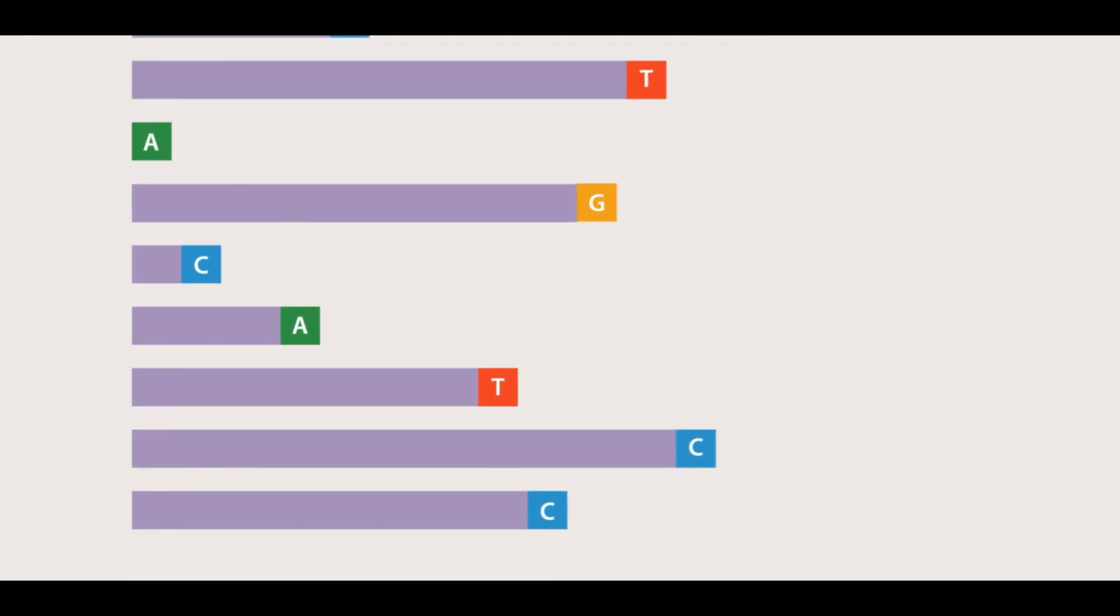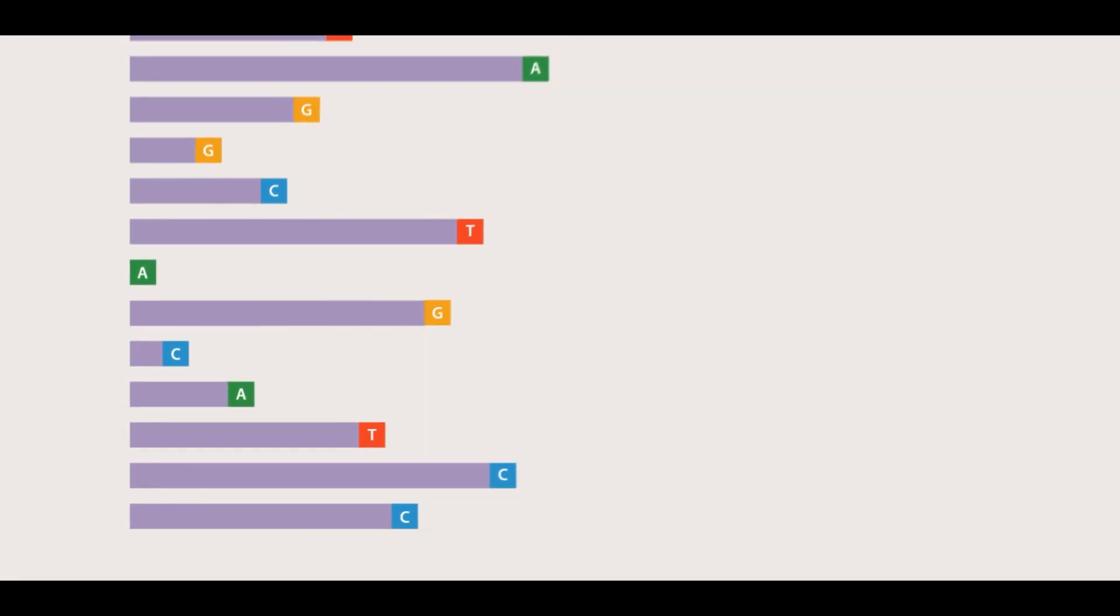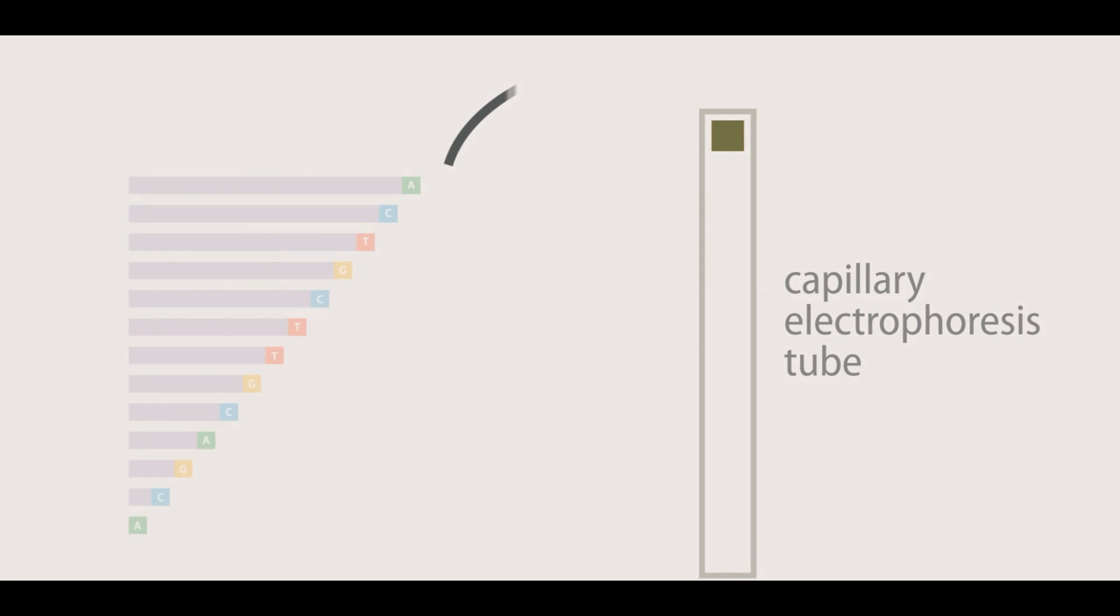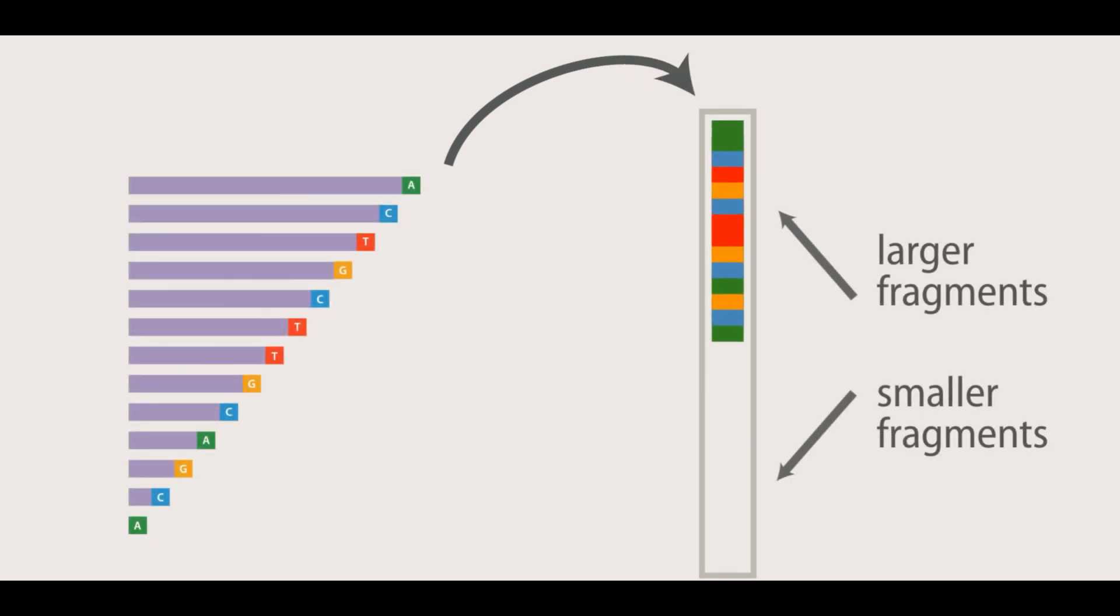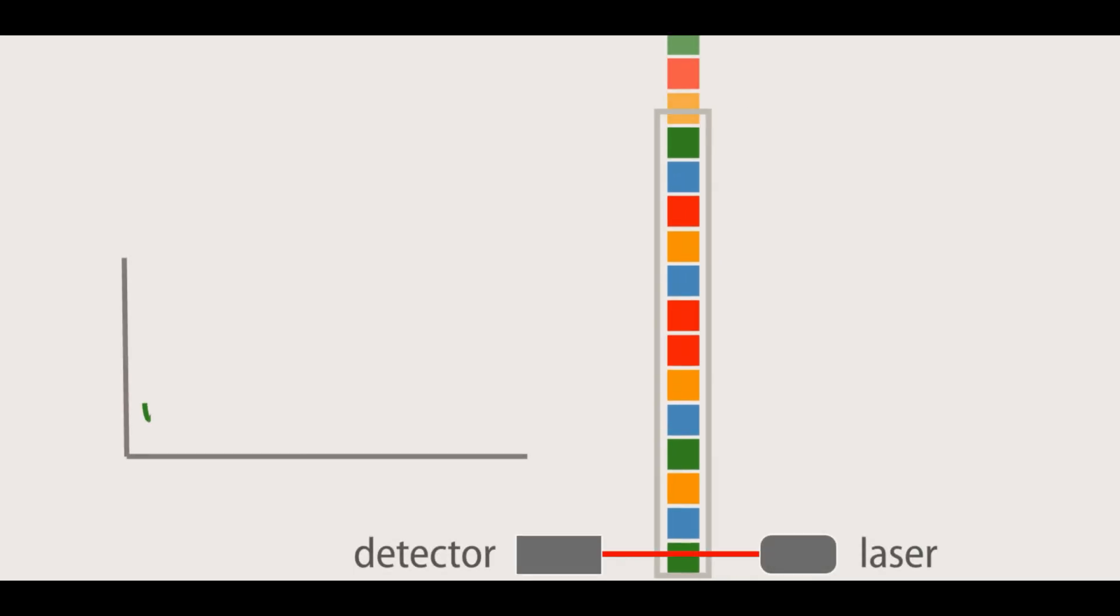The reaction mixtures are loaded on the sequencing machine, either manually onto slab gels or automatically with capillaries, and are electrophoresed to separate the DNA molecules by size. The DNA sequence is read through the fluorescent emission of the dideoxynucleotide as it flows through the gel.